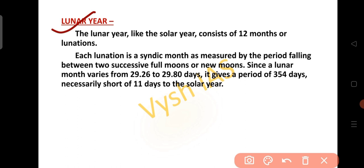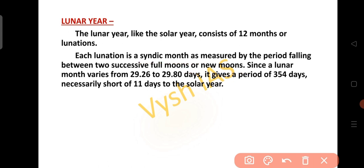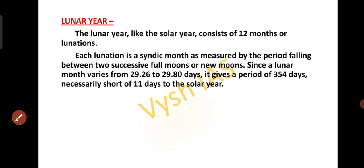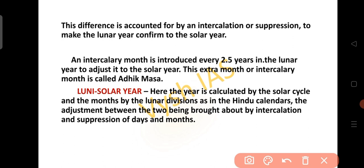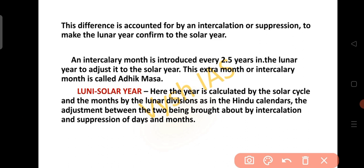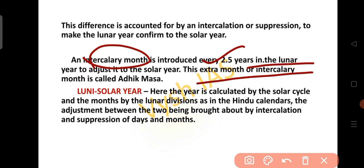The lunar year consists of 12 months or lunations. Each lunation is the synodic month, measured by the period between two successive full moons and new moons. The lunar year consists of 354 days, which is 11 days short of the solar year. This difference is accounted by intercalation or suppression to make the lunar year conform to the solar year. An intercalary month is introduced every 2.5 years, called Adik Masha.